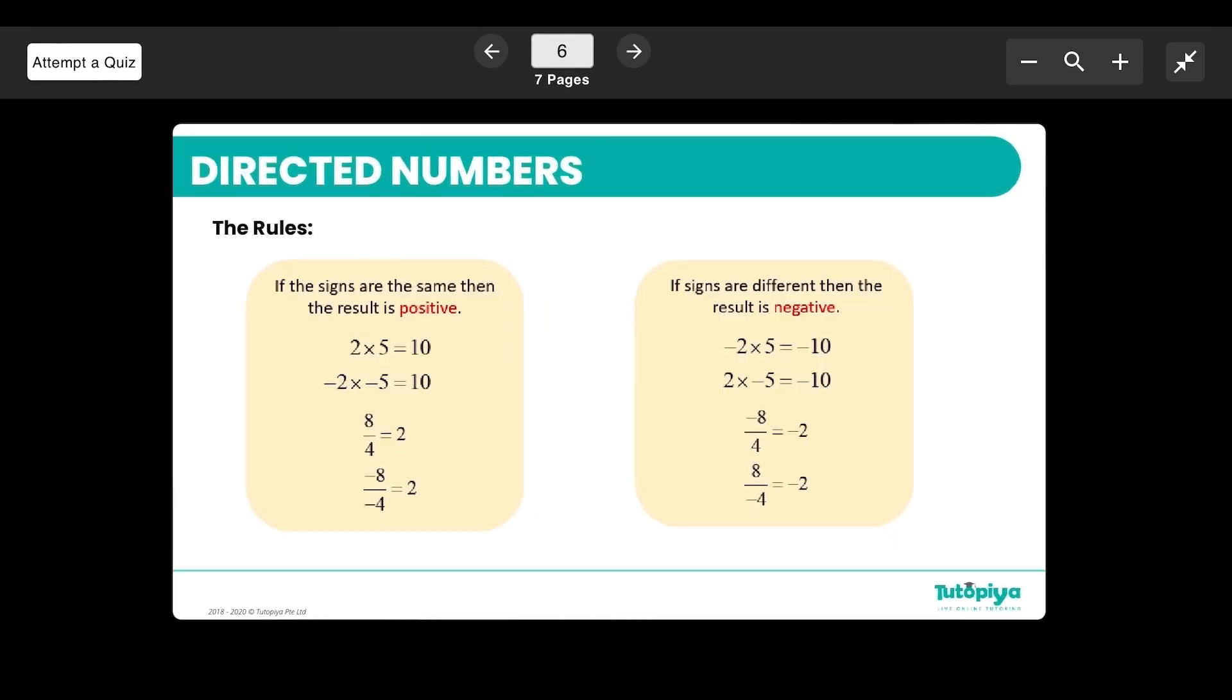A very important thing is the multiplication rules regarding directed numbers. If you multiply positive 2 by positive 5, that is 10. But if you multiply negative 2 by negative 5, that's also 10. If you divide positive 8 by positive 4, that's 2. If you divide negative 8 by negative 4, that's also 2.